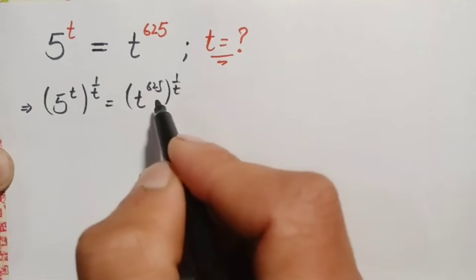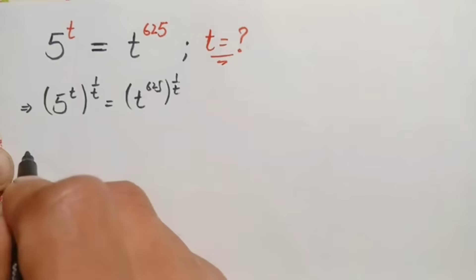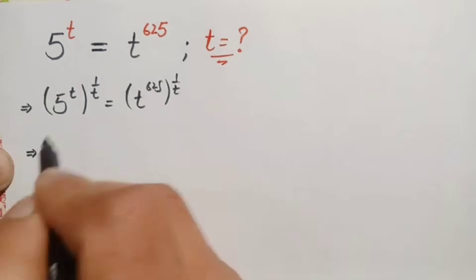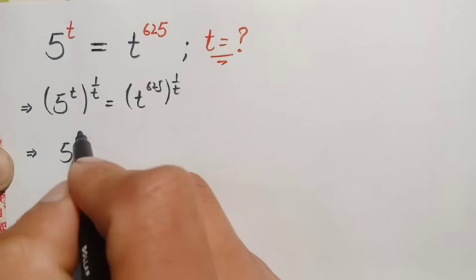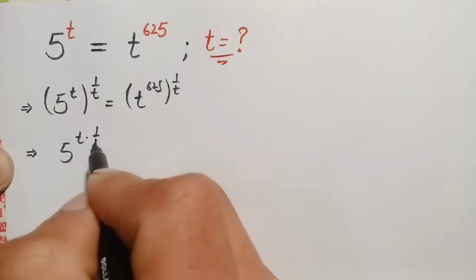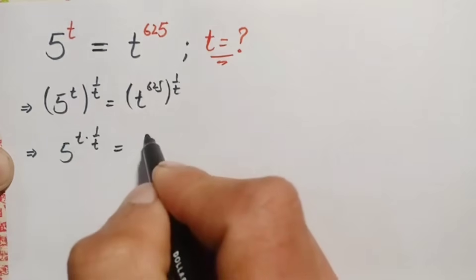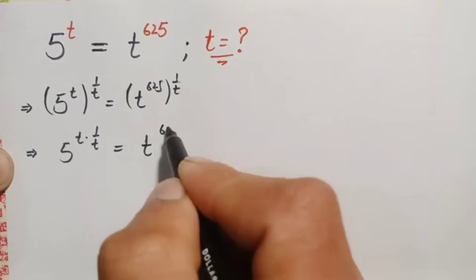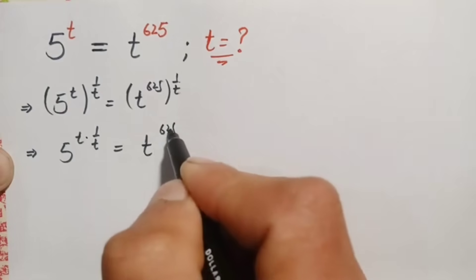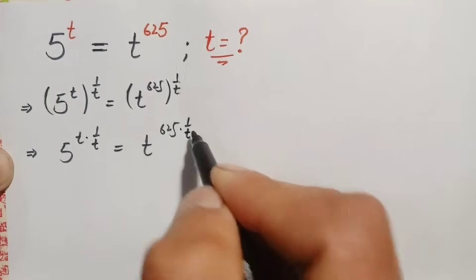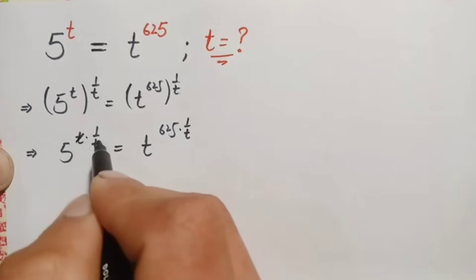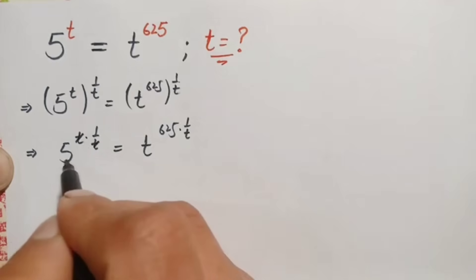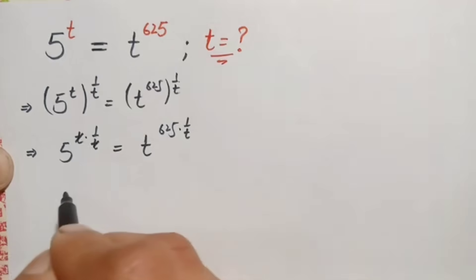On both sides of this equation we will use an exponential identity and multiply the powers with each other. So this equation becomes 5 raised to power t times 1 by t on the left-hand side. Since t times 1 by t cancels, this becomes 5 raised to power 1, which is simply 5.